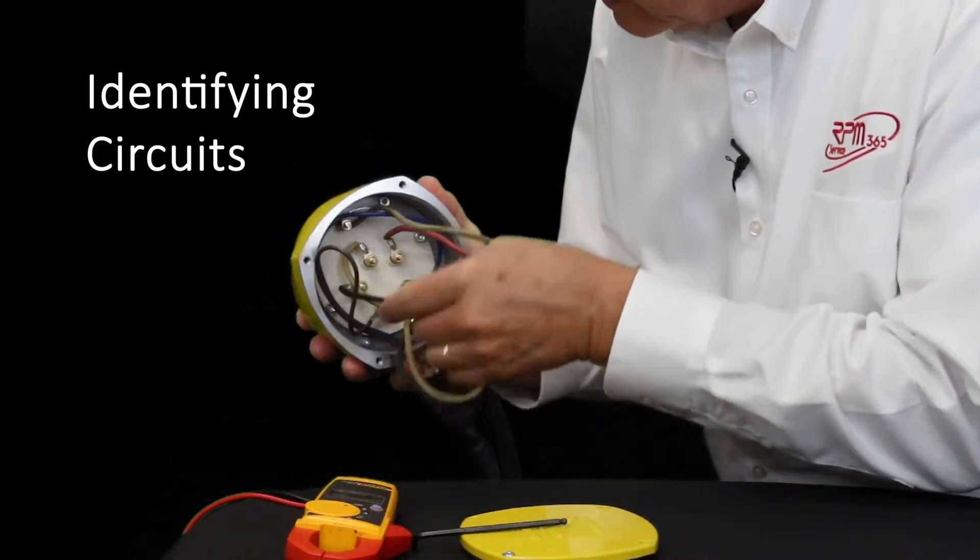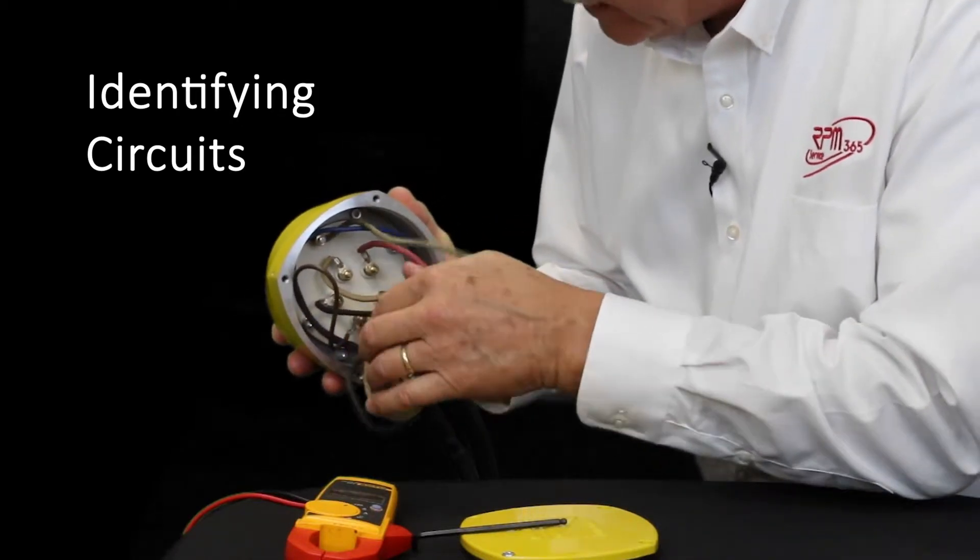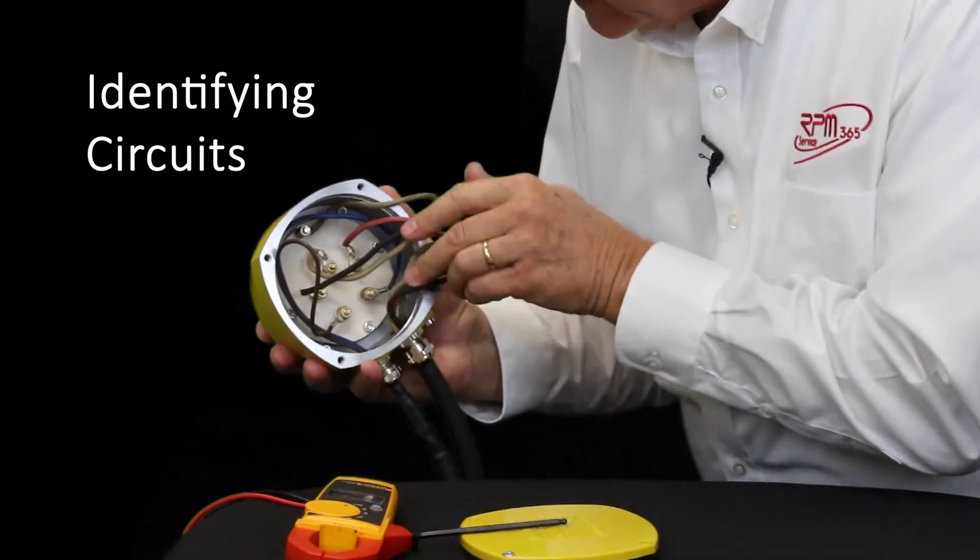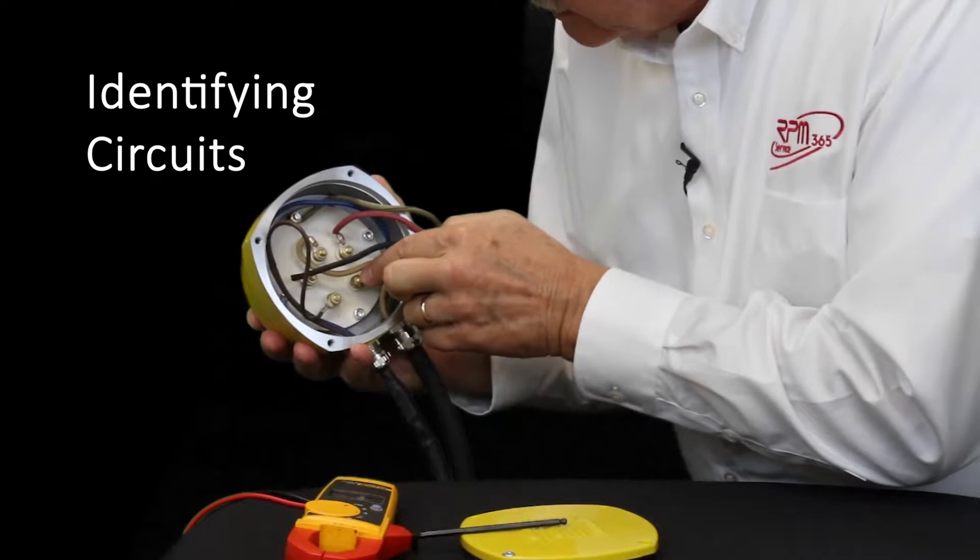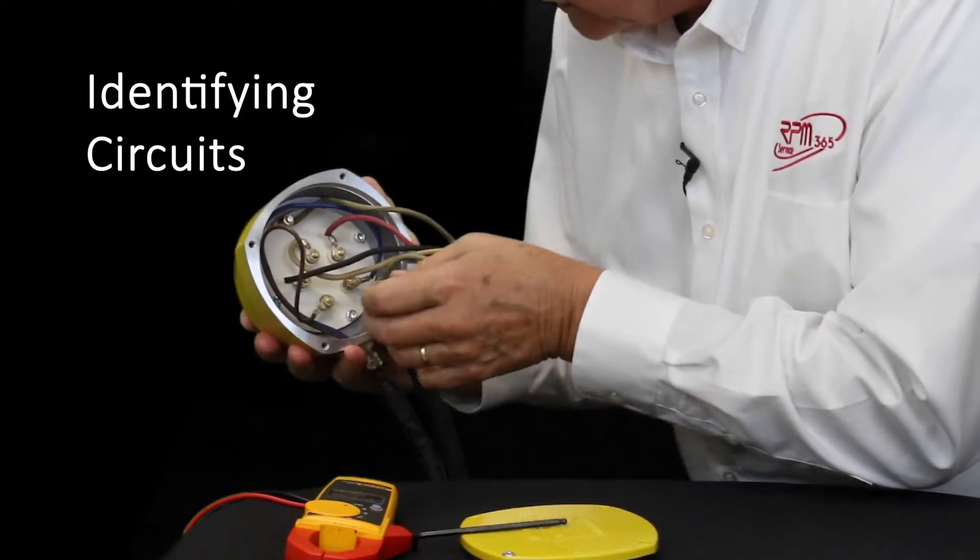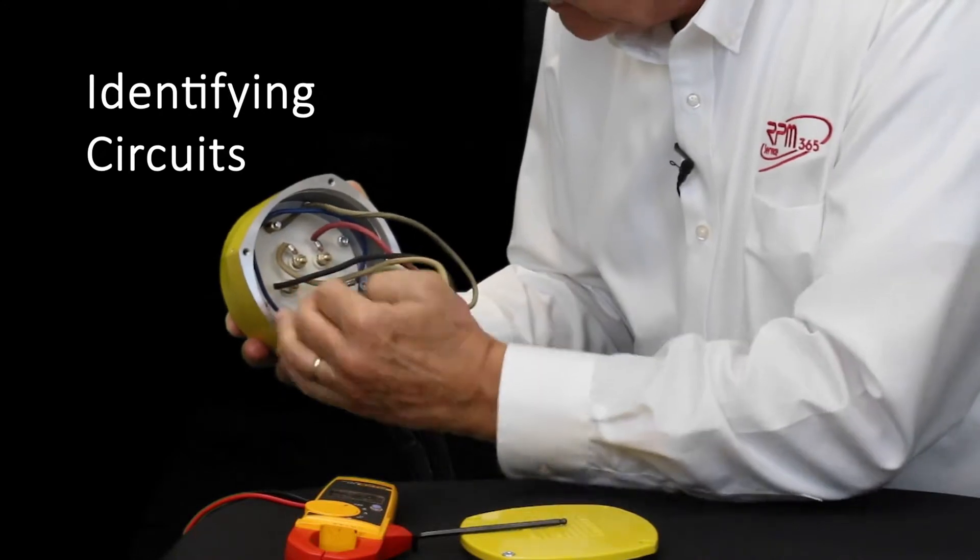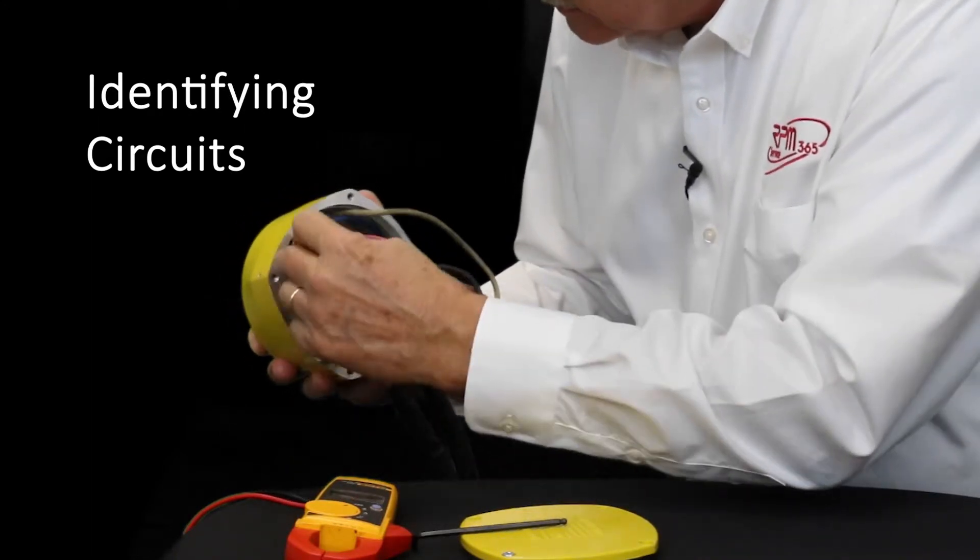These leads are colored black, white, and red in this example. Also notice that terminals T1 and T2 are to be connected to a normally closed control circuit. And in this example, the leads are colored brown and blue.